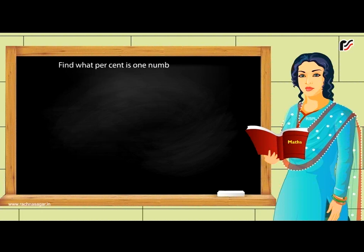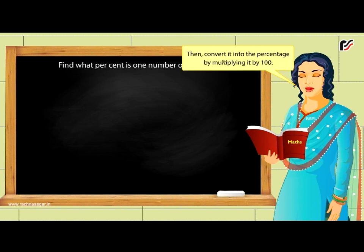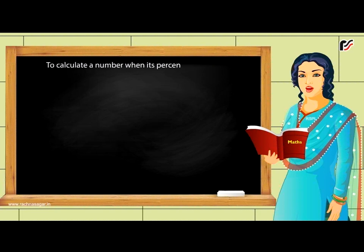Finding what percent one number is of another: To find what percent one number is of another, write the fraction with the given quantity as numerator and total quantity as denominator, then multiply by 100. For example, what percent is 25 of 200? Solution: 25/200 × 100 = 12½%.